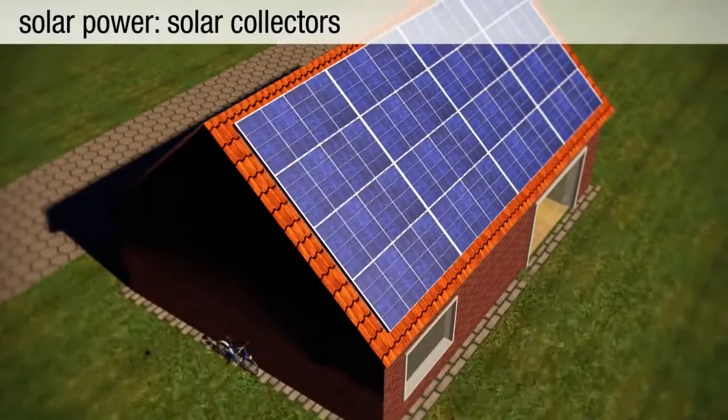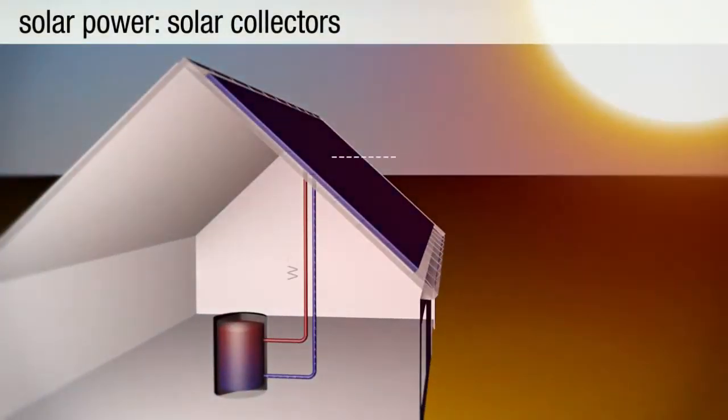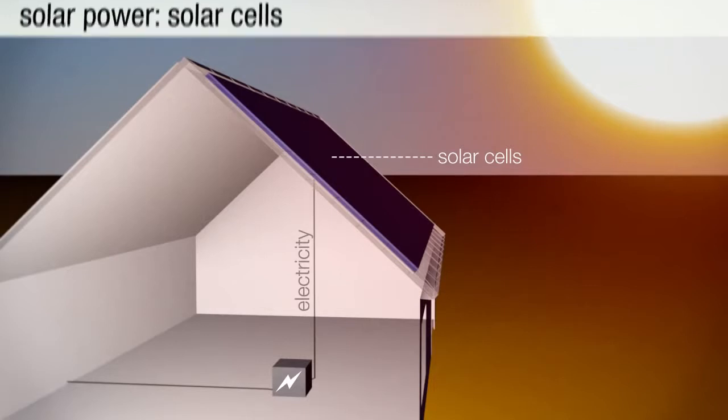There are two major forms of solar energy. Solar collectors heat a transmission medium with the sun's energy. On a small scale, this includes hot water heaters for individual households. On a large scale, concentrated solar power plants produce electricity. Solar photovoltaic cells convert the sun's rays directly into electricity. These systems are often installed on rooftops.